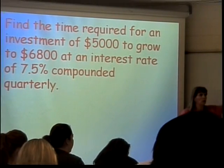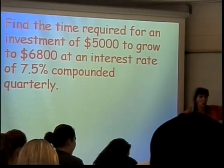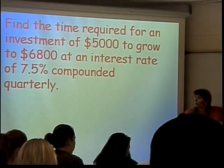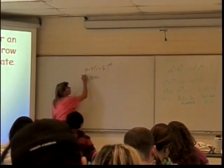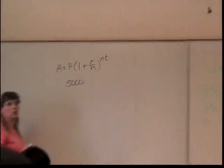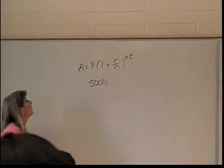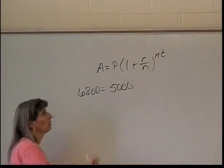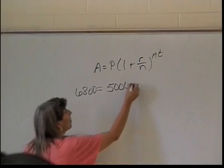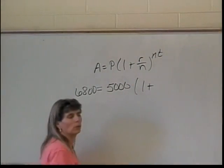I don't need a difference here. I have a principle, which is 5,000. There's no place in here for difference, so the principle is 5,000. A is 6,800. That's how much I'm supposed to end with.